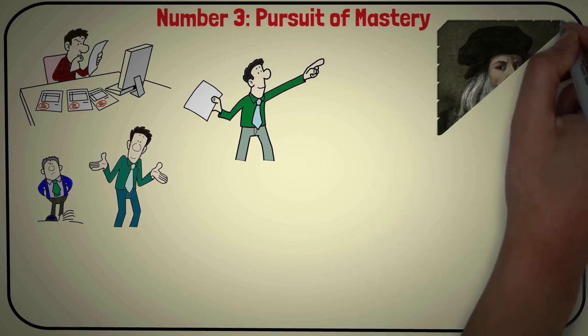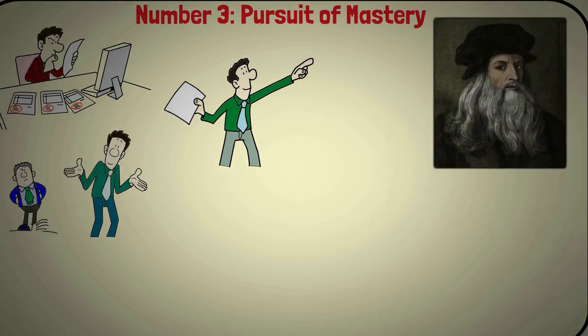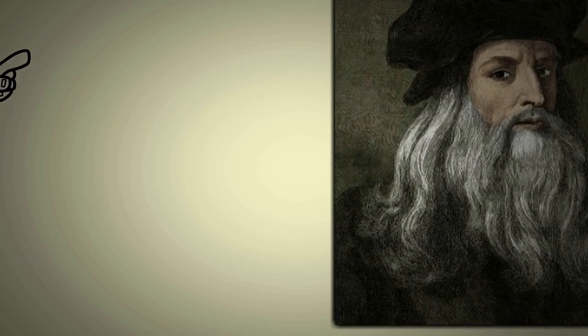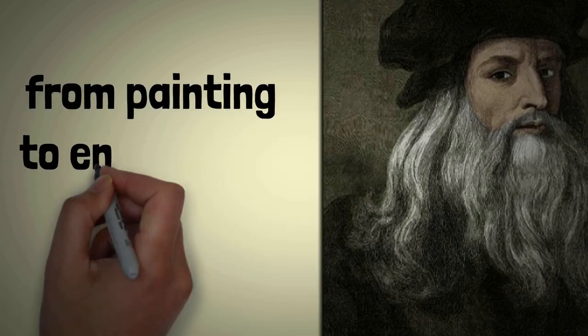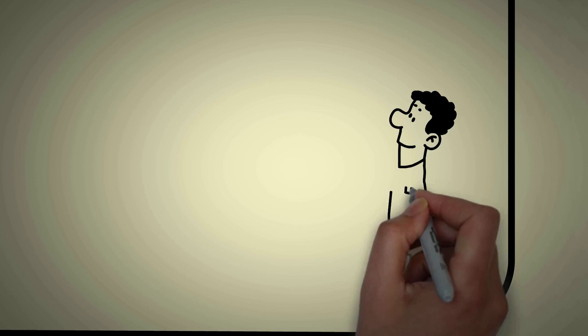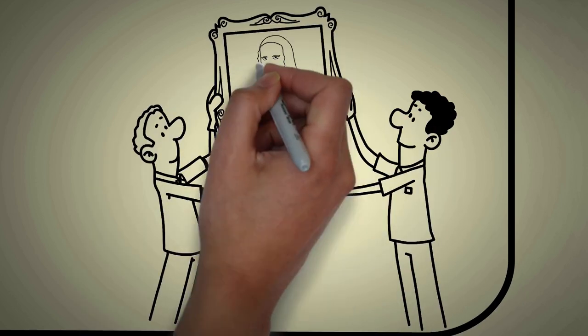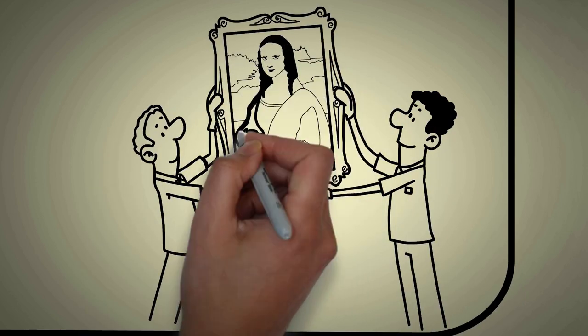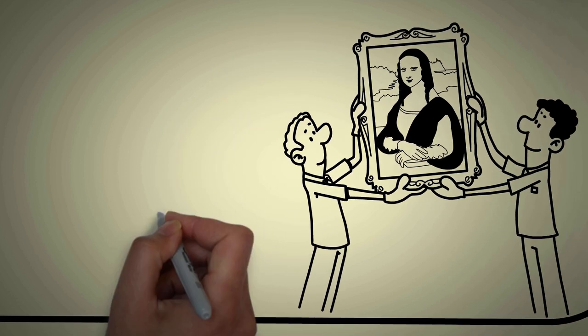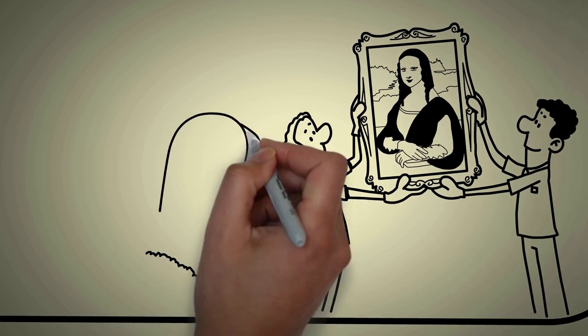Take the legendary Leonardo da Vinci, for example. He spent decades perfecting his craft, from painting to engineering to mathematics. His masterpieces, such as the Mona Lisa, are a testament to the years of hard work and dedication he put in. He kept his accomplishments and progress hidden from the public, only revealed after his death.